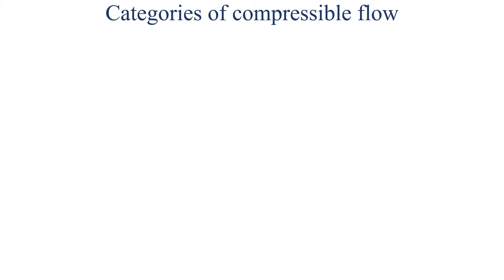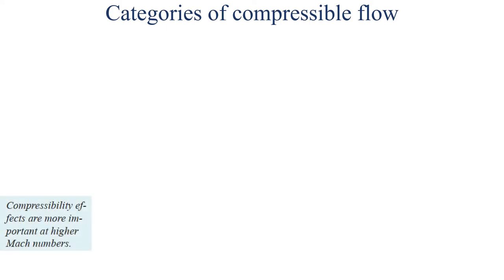Welcome to lecture number 12 of the Fluid Mechanics 2 course. In this lecture we will be talking about the categories of compressible flow. In the last lecture we derived an expression for the speed of sound and discussed the Mach number, which tells us how much the fluid is compressed. The Mach number is a ratio of the speed of an object traveling in a fluid to the speed of sound in that fluid.